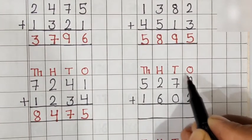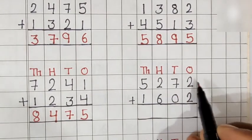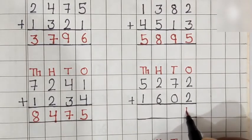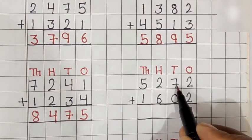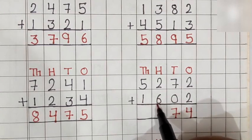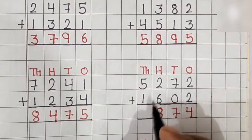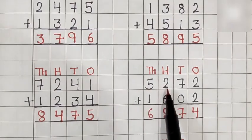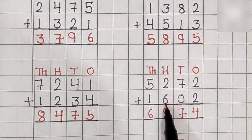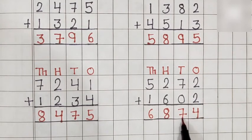This is the 1s place, this is the 10s place, this is the 100s place, and this is the 1000s place. Let's solve the 1s place first. 2 plus 2 is equal to 4. 7 plus 0 is equal to 7. 2 plus 6 is equal to 8. 5 plus 1 is equal to 6. So, 5,272 plus 1,602 is equal to 6,874.